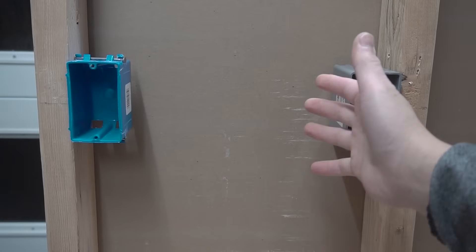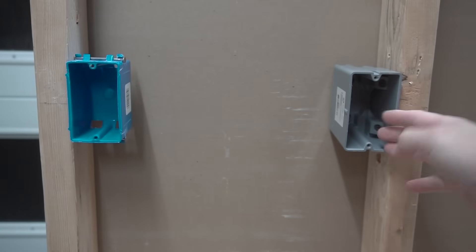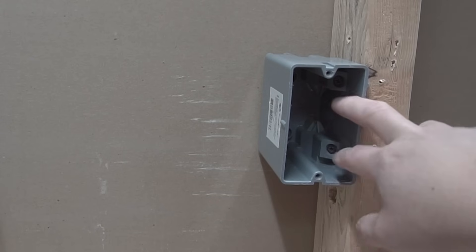So what I already have installed here are single gang J-boxes. You can either use a new work, which is the one nailed to the stud if you have an open wall and no drywall yet. But if you have drywall already installed, I highly suggest that you use an old work that is adjustable, which is the screw-in type like this one.